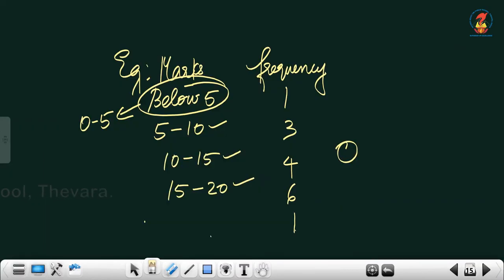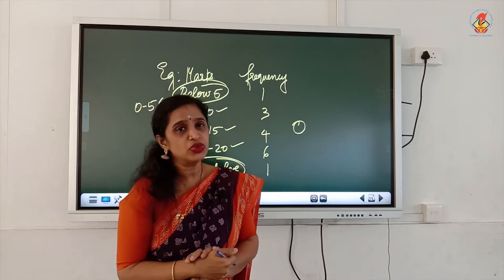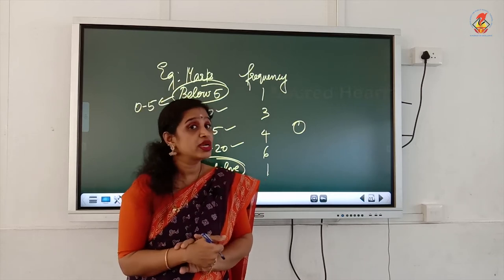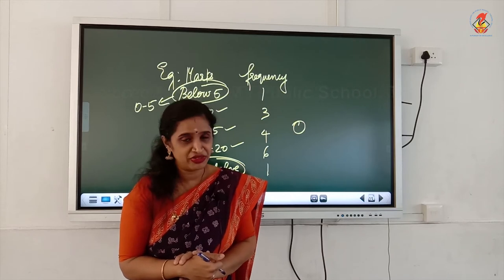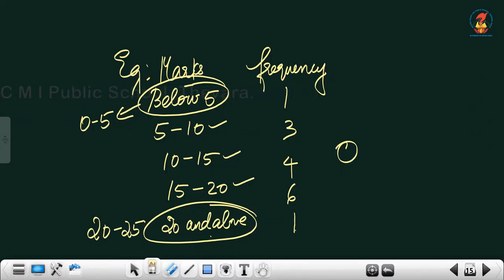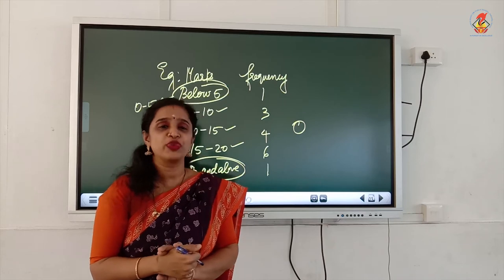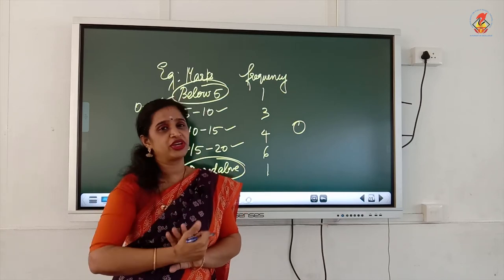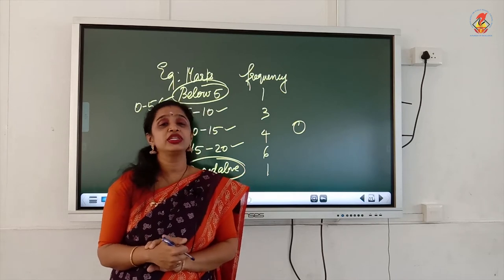For the last class interval '20 and above,' we add the magnitude (5) to 20, giving us 25. So 20 to 25 will be the last class interval. The complete set of class intervals is therefore 0 to 5, 5 to 10, 10 to 15, 15 to 20, and 20 to 25.